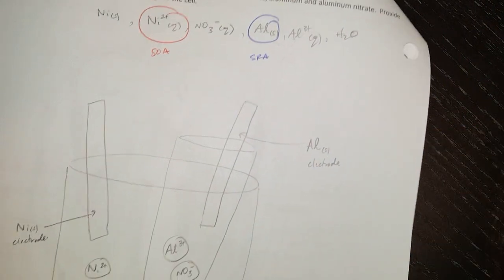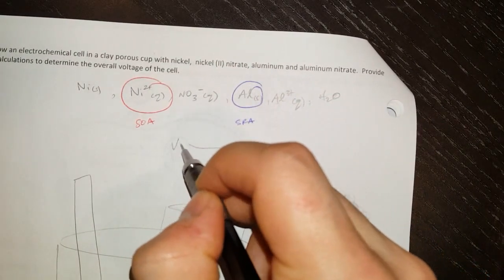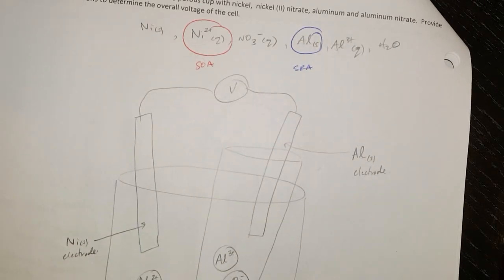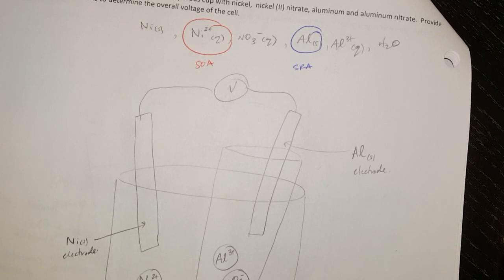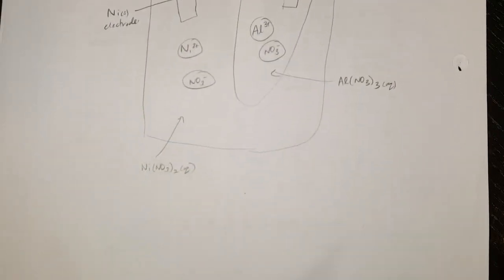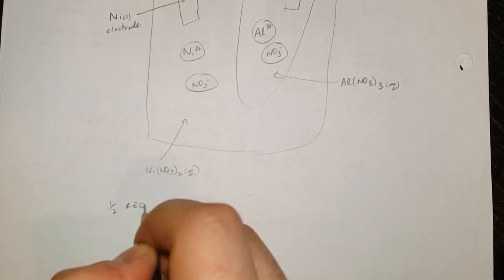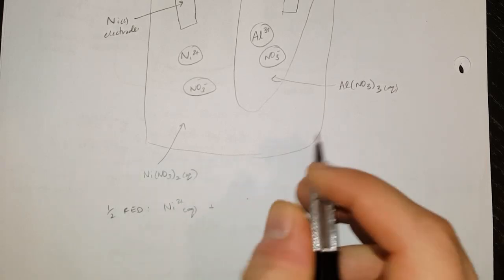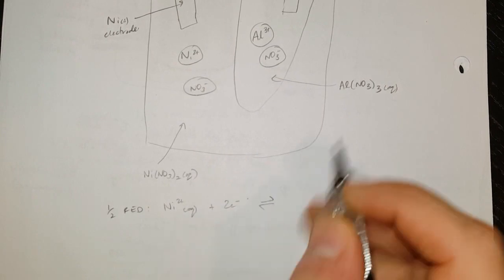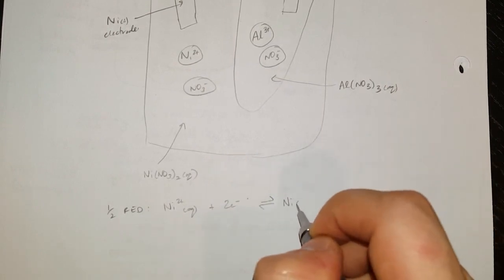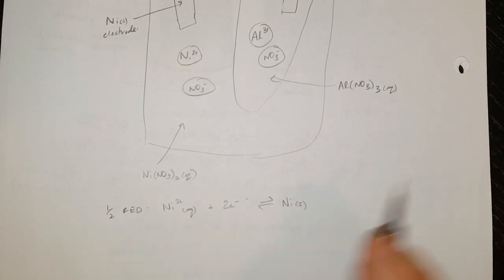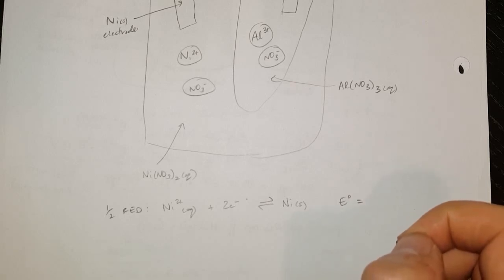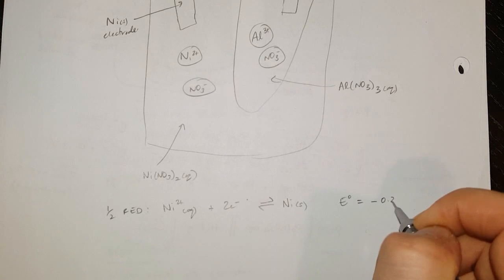This is very similar to before. I'm going to put a wire here, a voltmeter, and then a wire there. I'll do my half-reduction and half-oxidation reactions. Starting with my half reduction: nickel(II) positive plus two electrons forming nickel solid. Reduction is gaining electrons. The voltage for that — nickel(II) positive plus two electrons — is negative 0.26 volts.